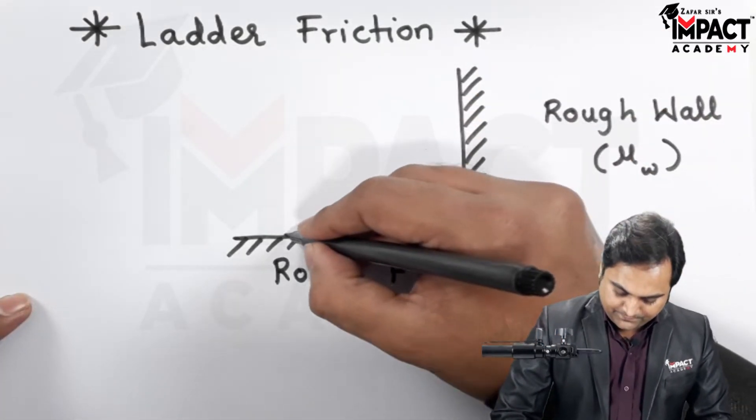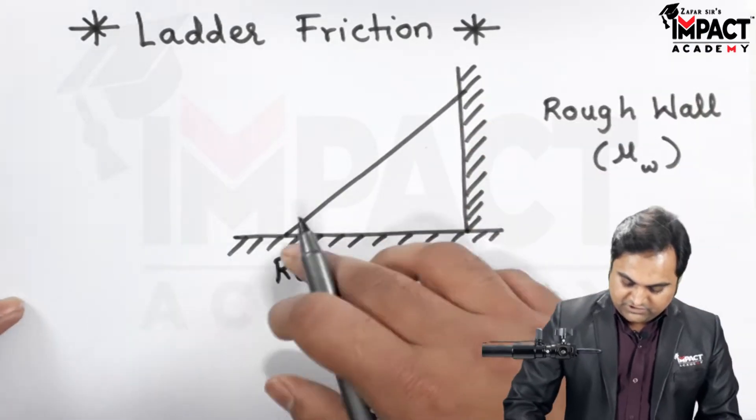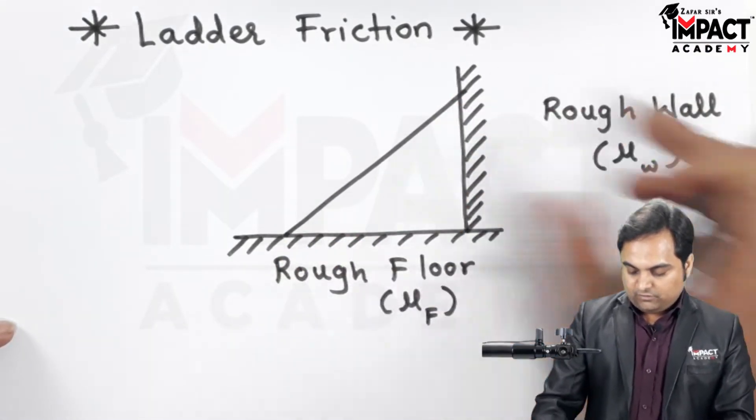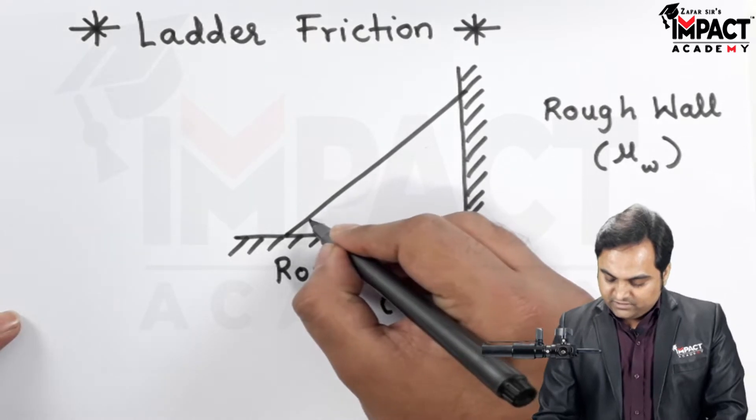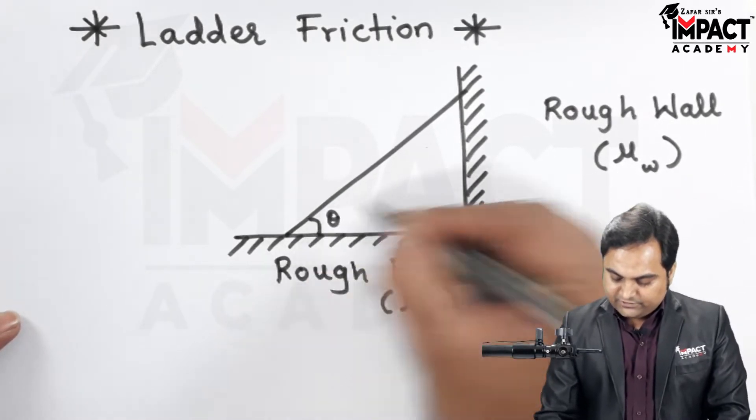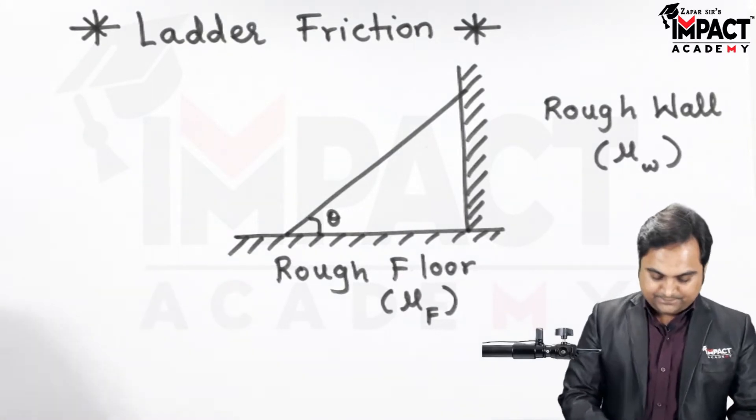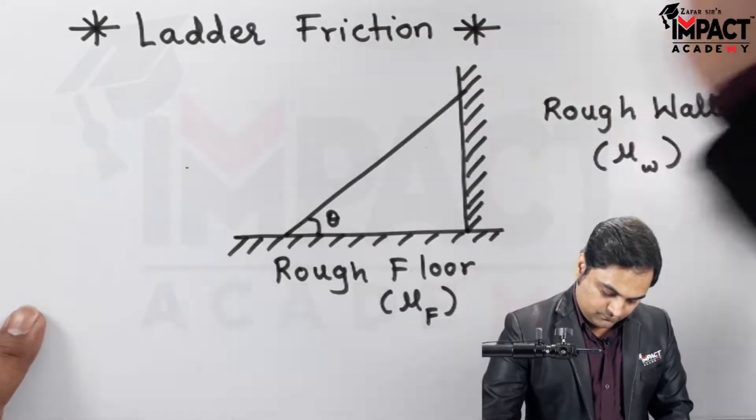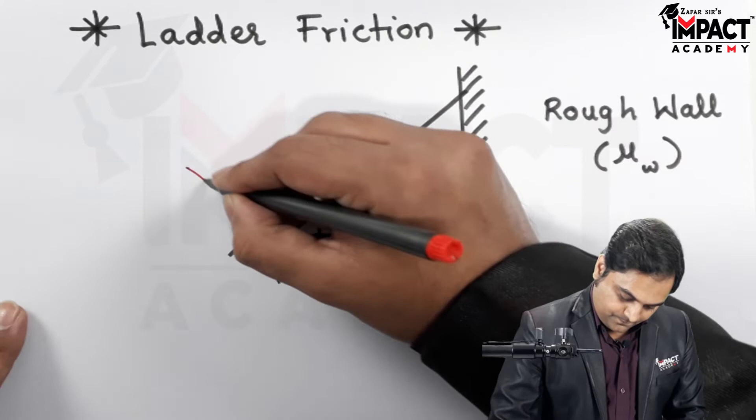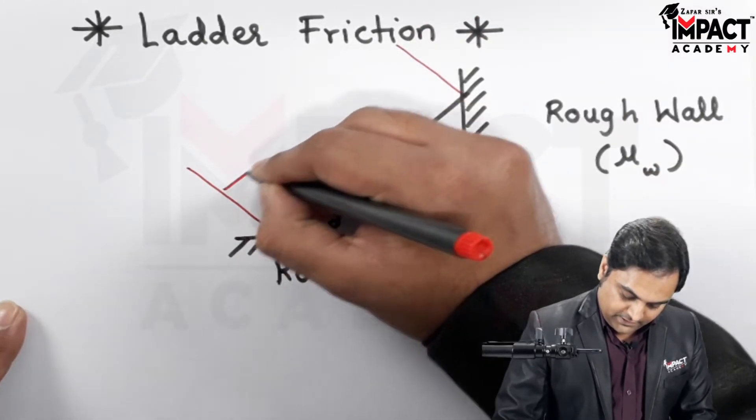The ladder with the help of a line which is joining or connected to the floor and the wall. The ladder is having an inclination of theta, then its length is capital L.